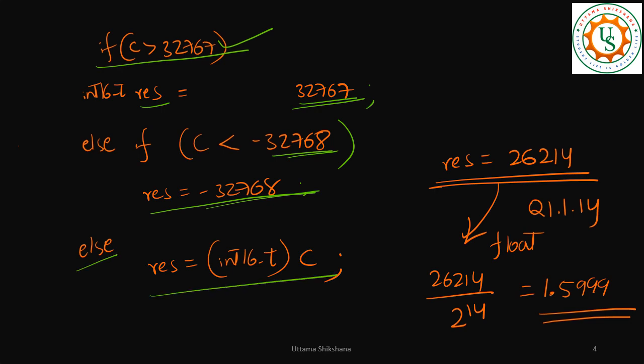Then if not, the result—you typecast C into int16 and store it in result.